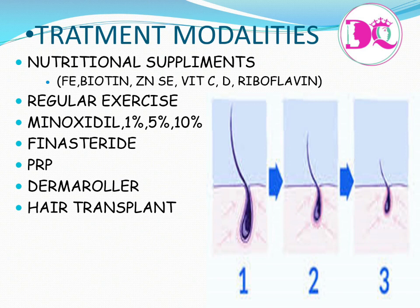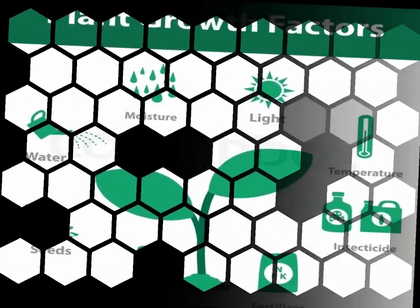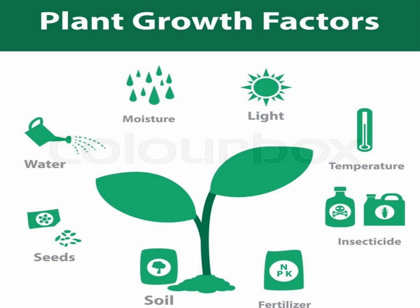Now the main question is: out of these modalities, which ones should you follow? To understand this better, consider this plant which is not growing well. The reason is the lack of sunlight, and there may be a deficiency of some other factors too. Now provide this plant with all the other growth factors except sunlight — the plant will grow a little better than before, but not to the optimum level, because of the lack of sunlight.